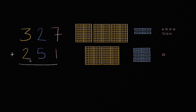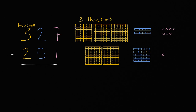I have two numbers here that I want to add together. The first number is 327, and that means three hundreds. I have a three in the hundreds place, and you see them right over here — three hundreds. Each of these big squares has a hundred little squares in them, so three of them is going to be three hundreds.